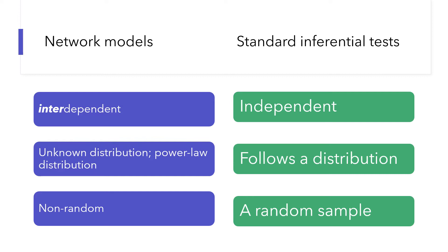Third, the network data are probably not random. The ties are usually not developed in a random manner, particularly in social networks. But in standard inferential tests, you can assume that the data are a random sample. With those differences of network data, we need some special methods to analyze network data statistically.